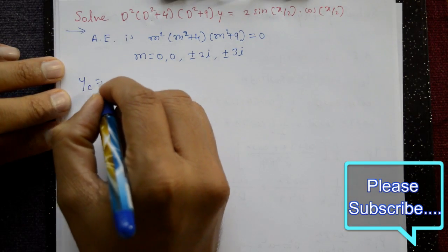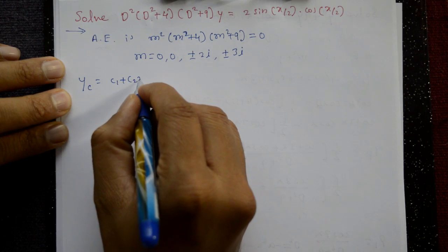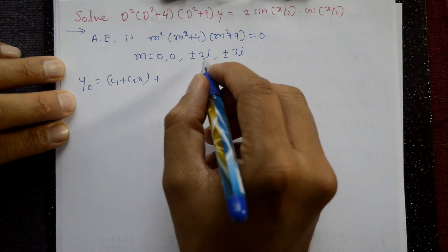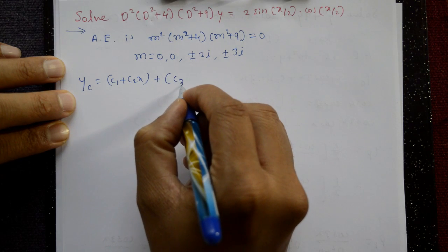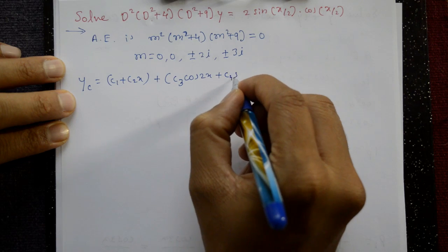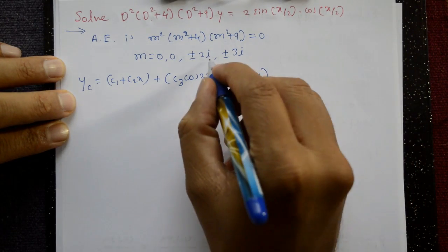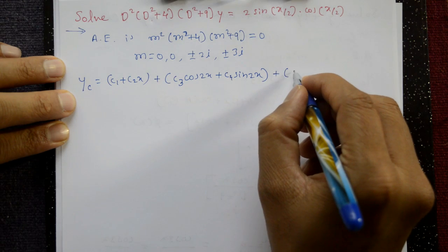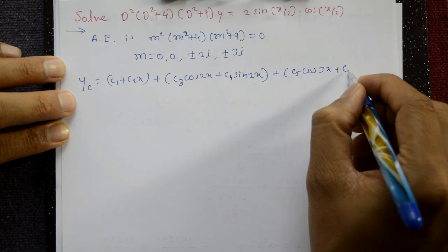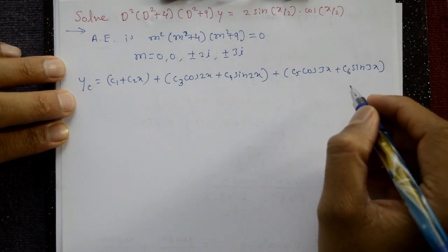Now the complementary function: since two roots are the same (m=0,0), we get c1 plus c2·x, plus complex roots: c3·cos(2x) plus c4·sin(2x), plus c5·cos(3x) plus c6·sin(3x). This is the complementary function.